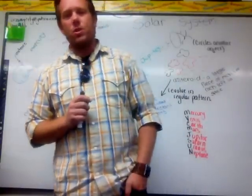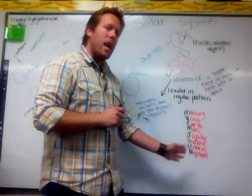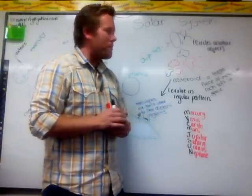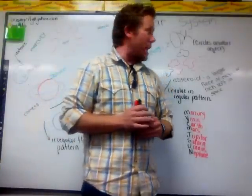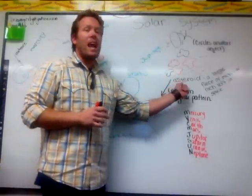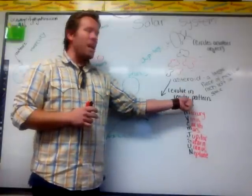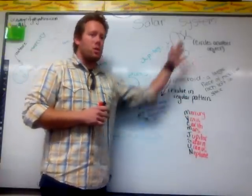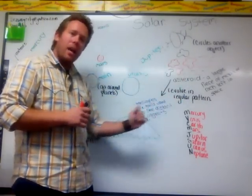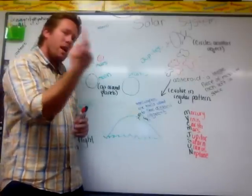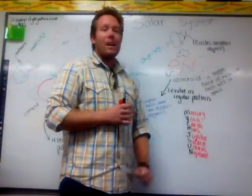The solar system includes the sun as well as these eight wonderful planets. You're also going to need to know some key vocabulary for the test. Asteroids are rocks that fly in a regular pattern around the sun — they're not just moving around all over the place, but they stay in a regular pattern as they revolve around the sun.